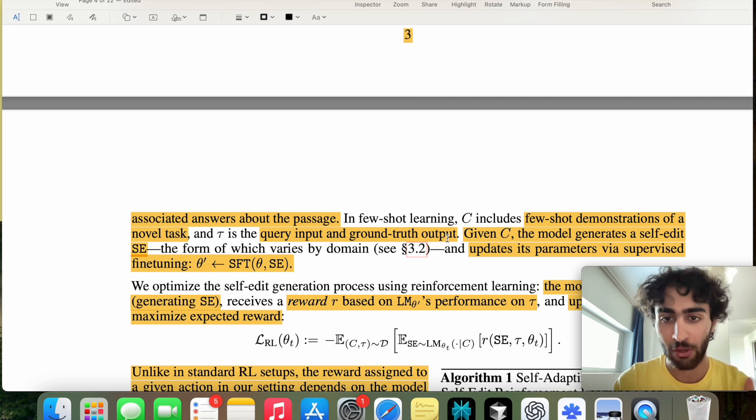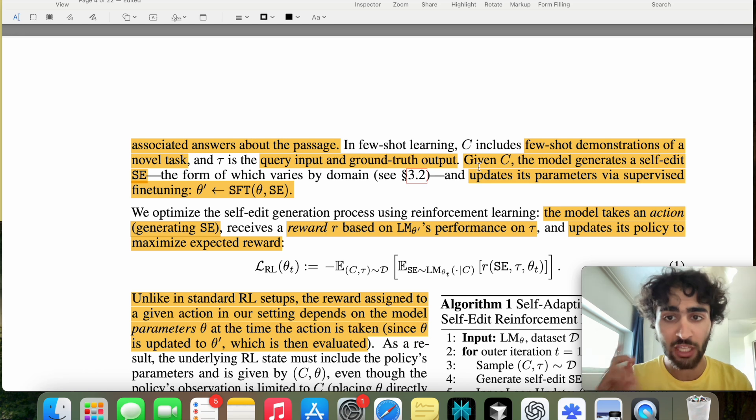And then in few-shot learning, so this is knowledge incorporation now, few-shot learning. C includes a few few-shot demonstrations. So some examples to the LM to understand the task. And then tau is just literally asking a new question because of course, if we ask the same few-shot example, then the model will literally memorize it. So it's a different test example. And then the actual ground truth, which will allow us to evaluate the reward.